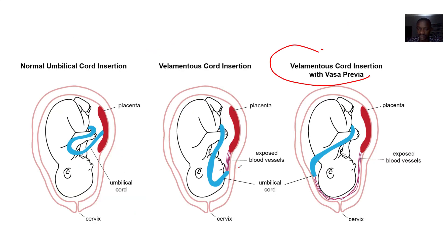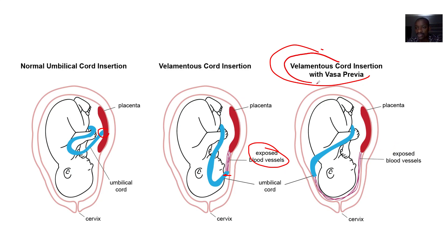You see how the umbilical cord should have attached directly to the placenta, but in this case it is attaching to some exposed blood vessels before going to attach to the placenta. Then with velamentous cord insertion with vasa previa, the attachment is even longer.